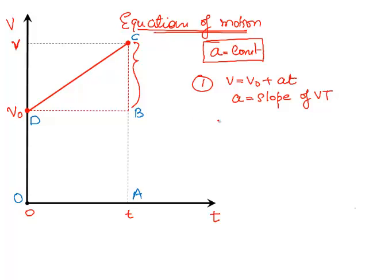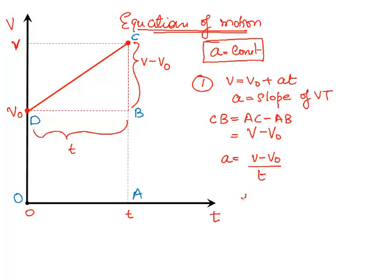You can clearly see that CB is AC minus AB. And AC is nothing but V, and AB is nothing but V0. So this has to be V minus V0. And this, which is DB, it has to be T. That's our time. And so, the slope is going to be V minus V0 divided by T. Rearranging, I get AT is equal to V minus V0. And therefore, I get V minus V0 equal to AT. First equation in place.